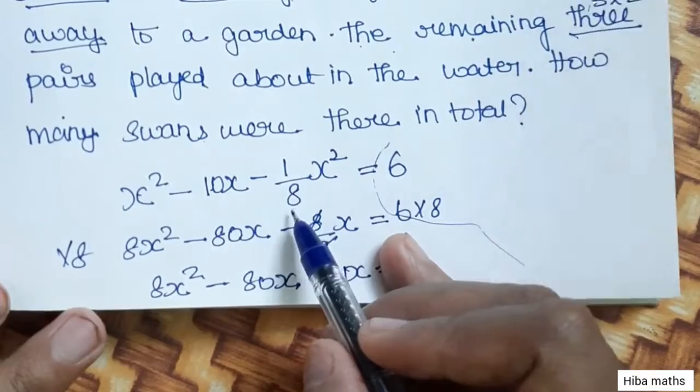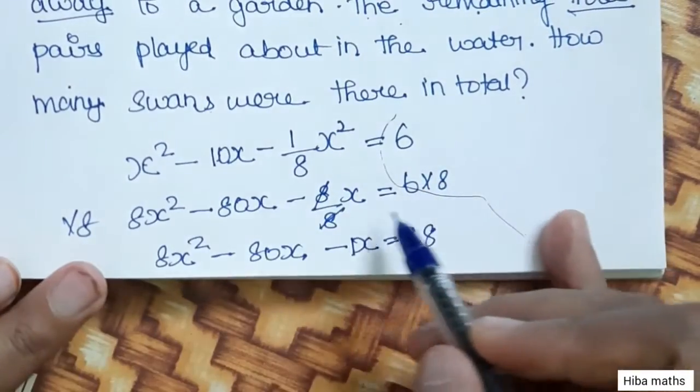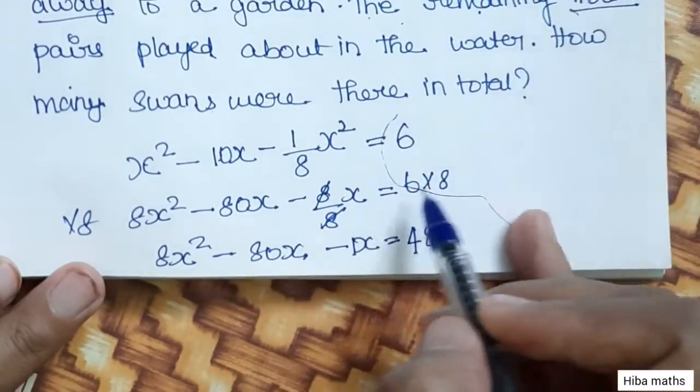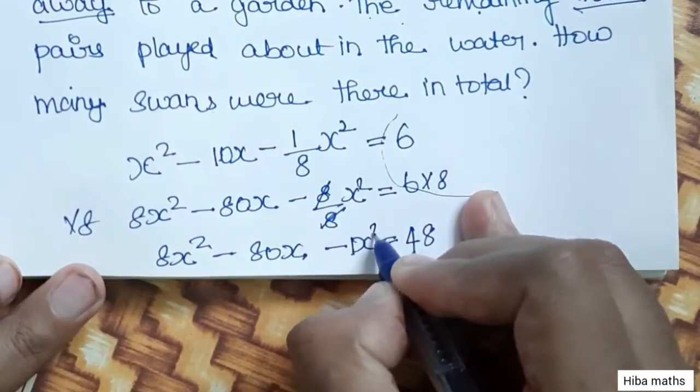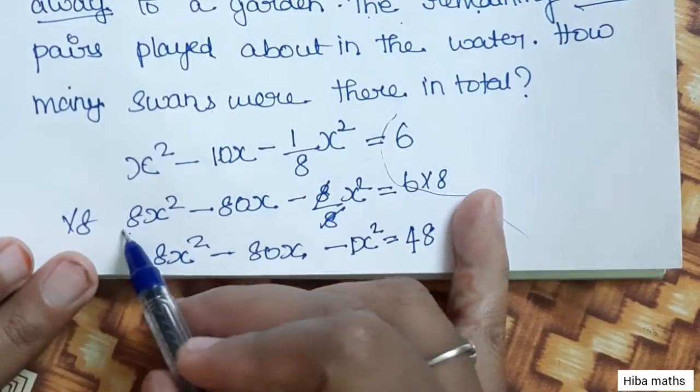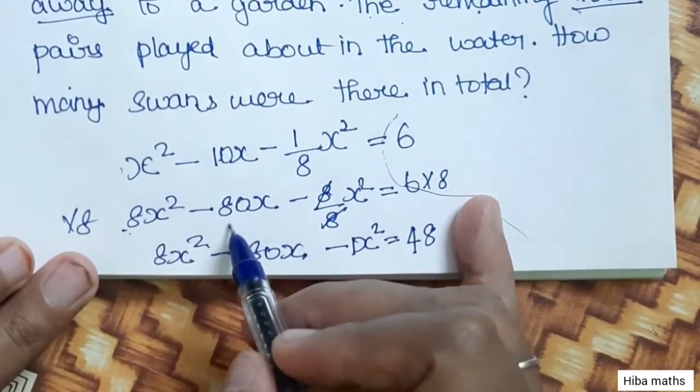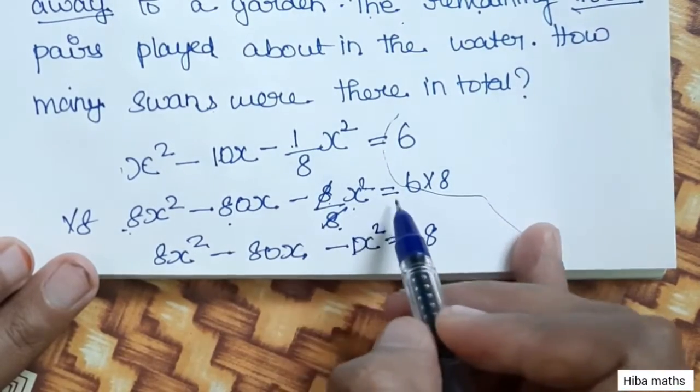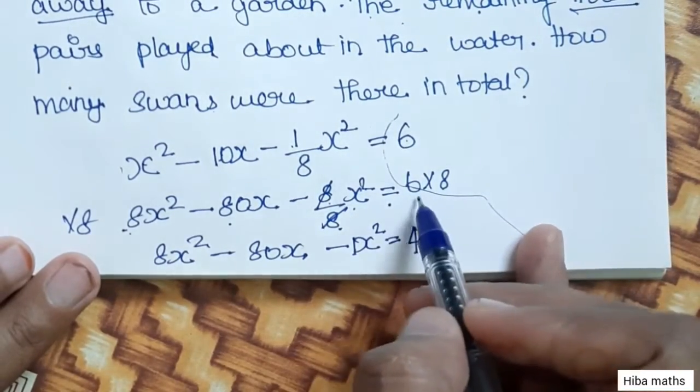So the equation becomes: x² - 10x - x²/8 = 6. Multiplying the denominator by 8, we get 8x² - 80x - x² = 48.